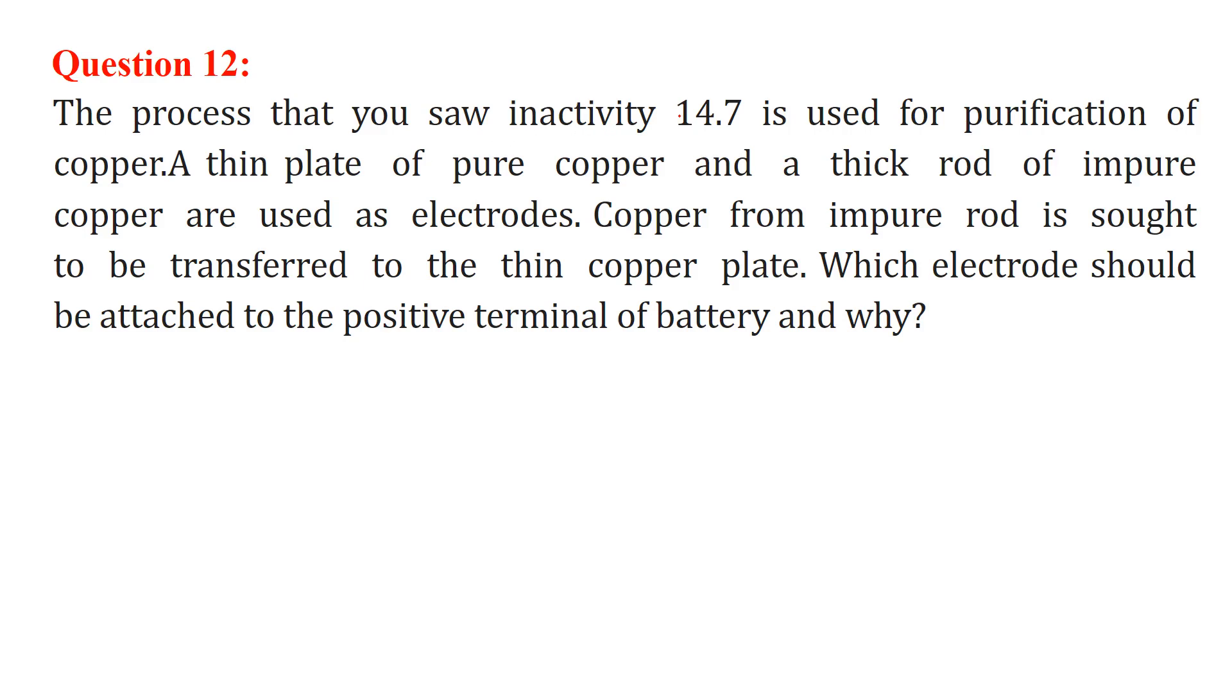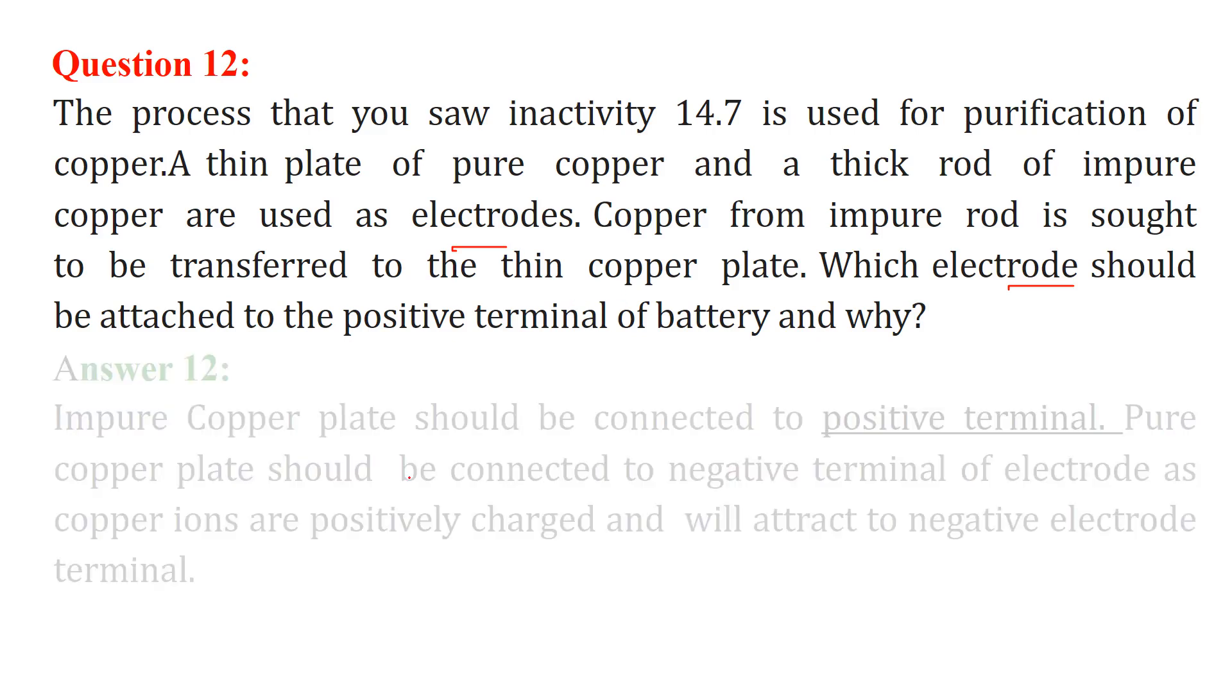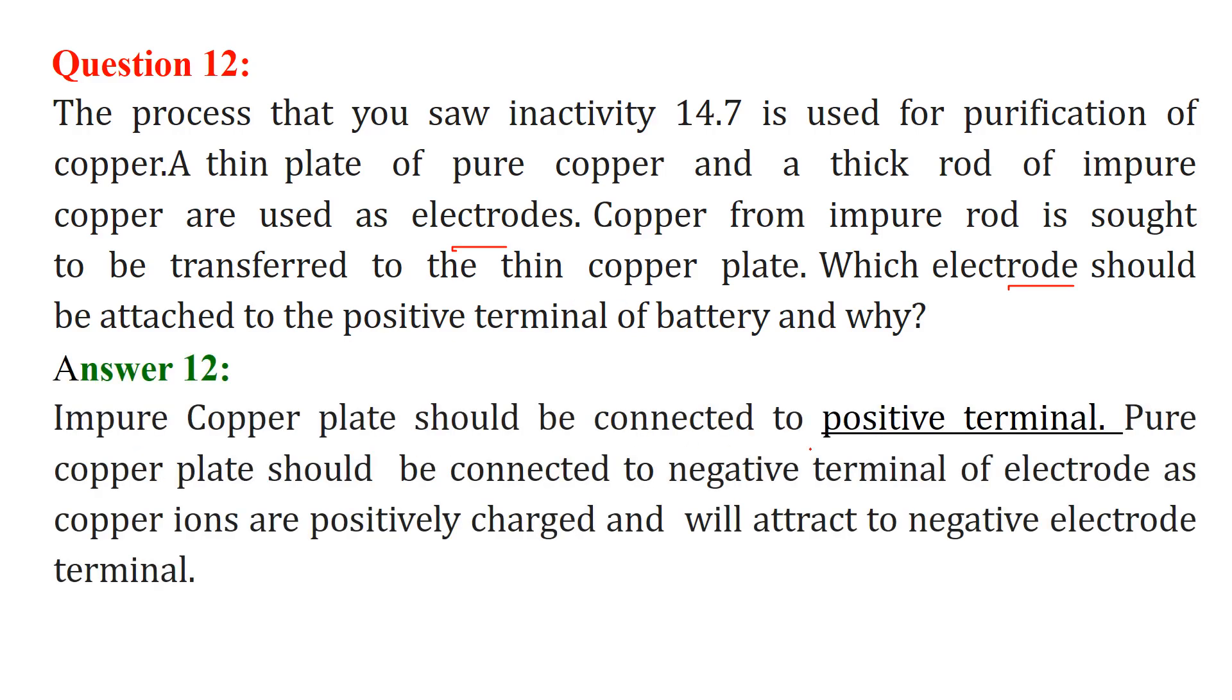The process that we saw is used for purification of copper. A thin plate of pure copper and a thick rod of impure copper are used as electrodes. Copper from the impure rod is sought to be transferred to the thin copper plate. Which electrode should be attached to the positive terminal of battery and why? The impure copper plate should be connected to the positive terminal. Pure copper plate should be connected to the negative terminal because the copper ions are positively charged, Cu+, and this will attract the negative electrode terminal.